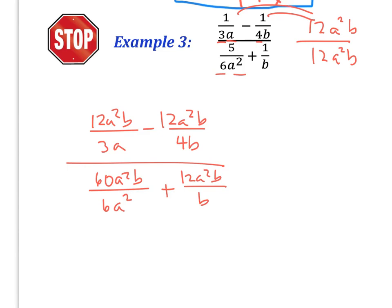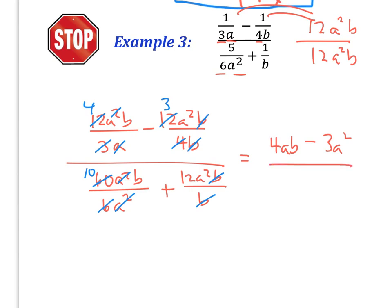When I go to simplify: 3 goes into 12 four times, and the A cancels one of the A's from A squared. 4 goes into 12 three times, and the B cancels. So my numerator becomes 4AB minus 3A squared. In the denominator, 6 goes into 60 ten times and the A squareds cancel out. The B's cancel too, so in the denominator I'm left with 10B plus 12A squared.